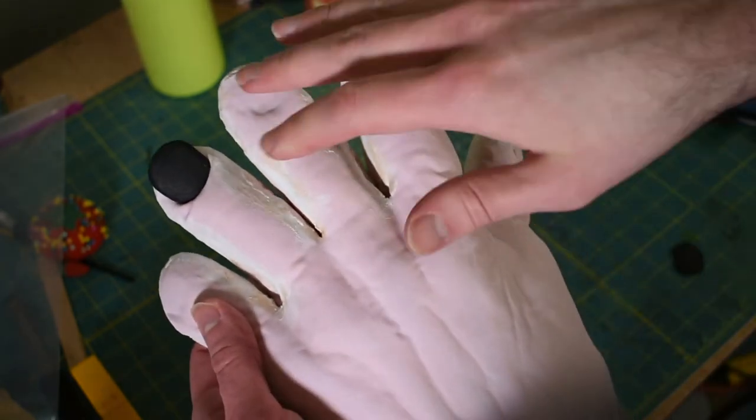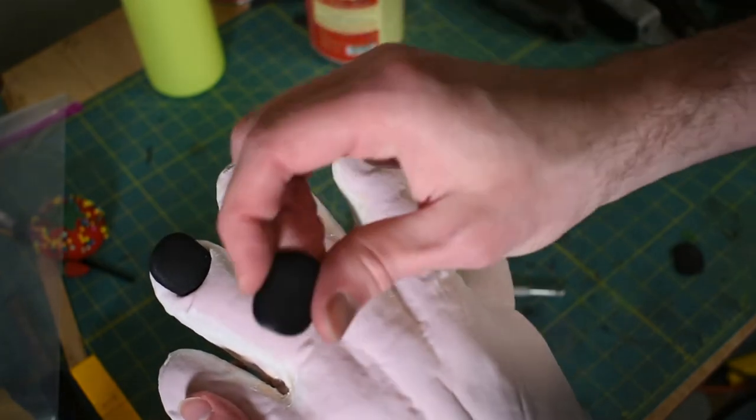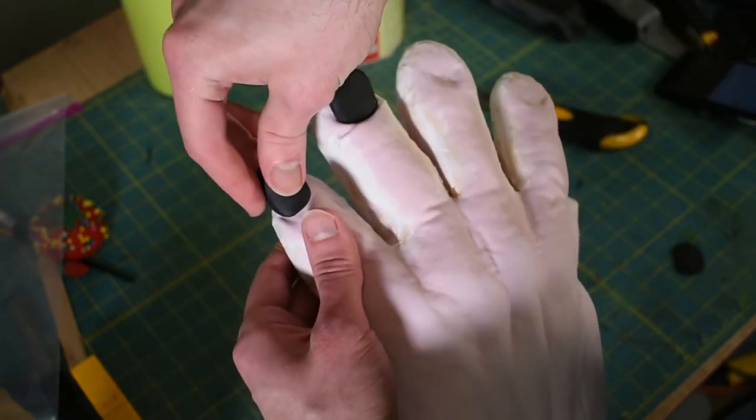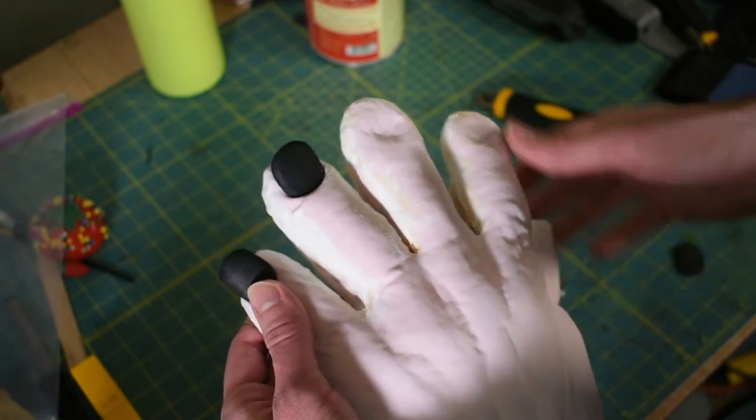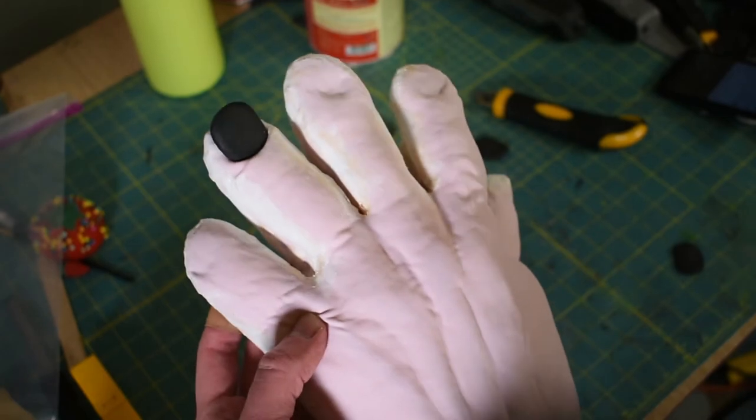So I'm going to do that with all the fingers first, just in case some of the nails were shaped for certain fingers. Like I know this one's a little bit smaller, so this is for the pinky, but some of the others might also be shaped slightly different. So I'm just going to go through, cut the fabric on all those, test fit them, and then I can glue them in.